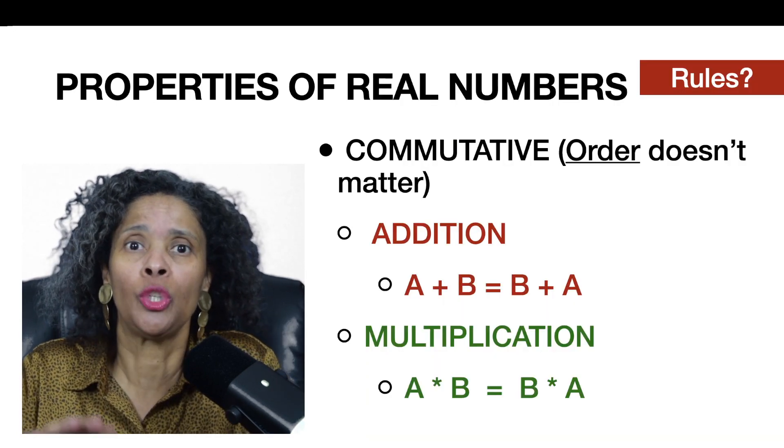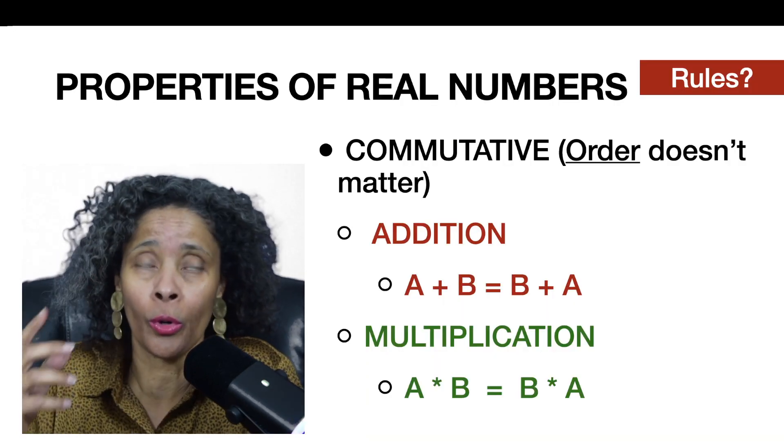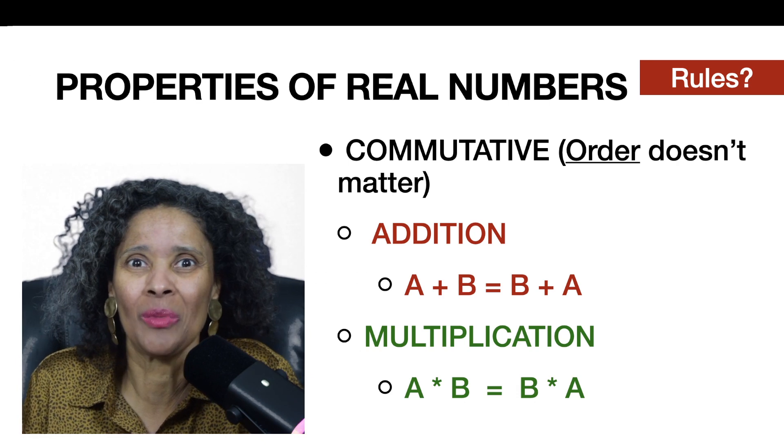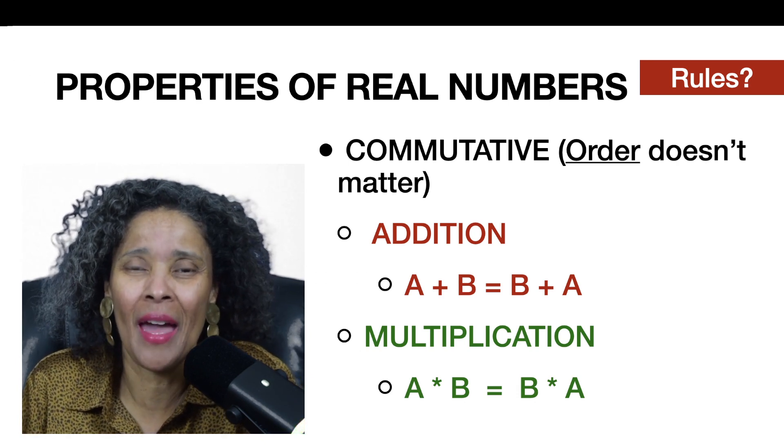So, the commutative property really has everything to do with order. When you think commutative, think order. And think order doesn't matter when it comes to certain operations in math, right?